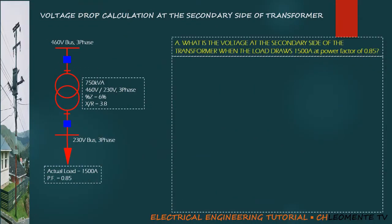In determining voltage drop in the secondary of transformer, we will learn how to calculate parameters such as impedance voltage or %Z of transformer, the X over R ratio, the actual load, and the power factor, which are very important.